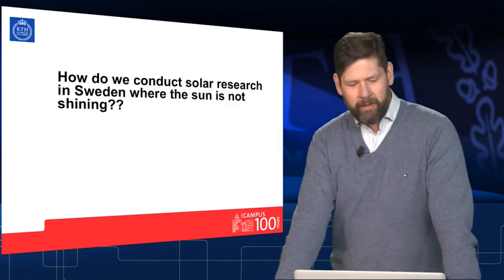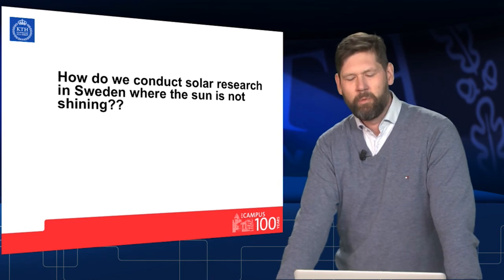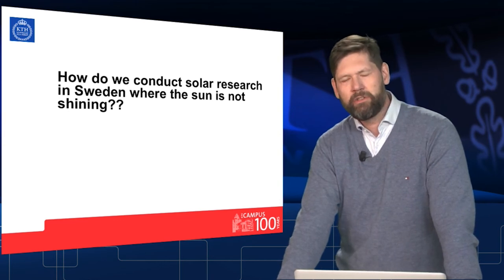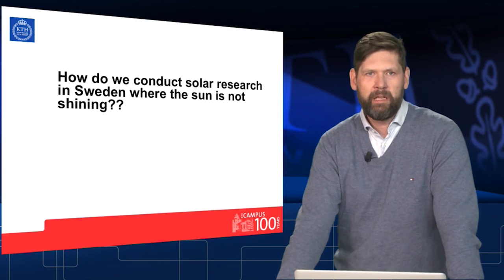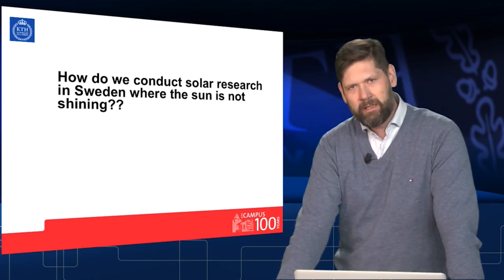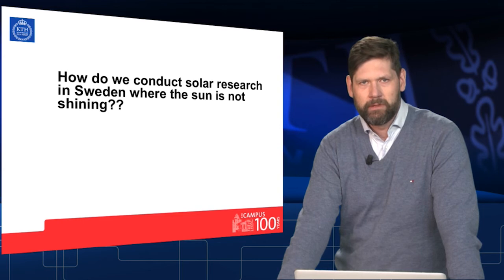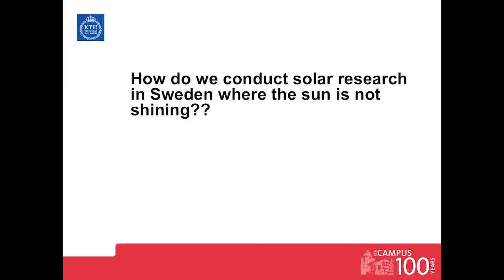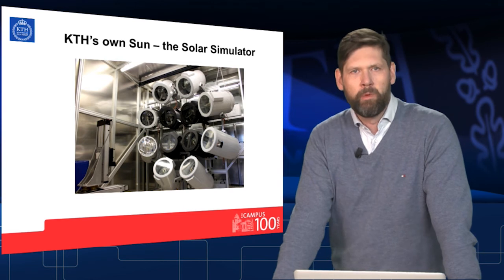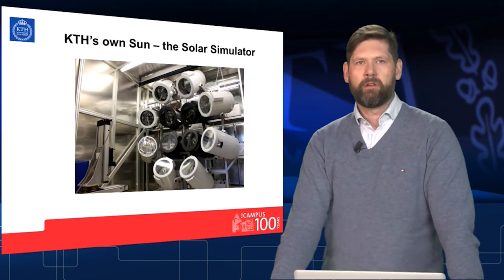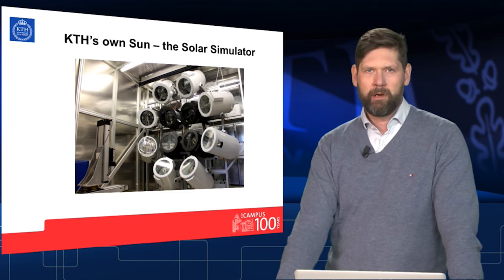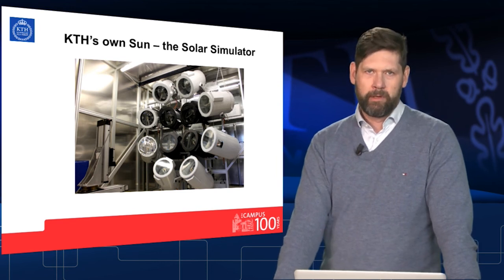But how do we conduct solar research in Sweden where the sun is really not shining? On a day like this we can see it is cloudy. We have only six to eight hours of light and we still want to do our research. So what we do is we build our own sun — we replicate the conditions of these solar power plants in a laboratory.